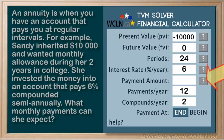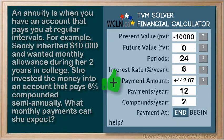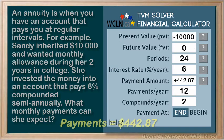So we click the question mark and solve for the payment amount, and we end up with positive $442.87. This makes sense because these are payments coming from the bank and going into our pocket. So we can conclude that the monthly payments that Sandy receives are $442.87.